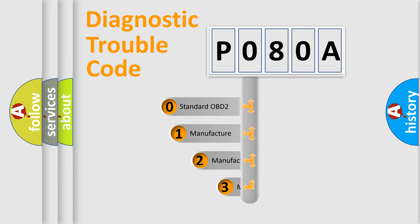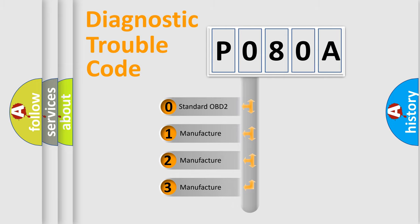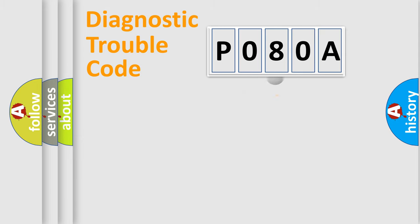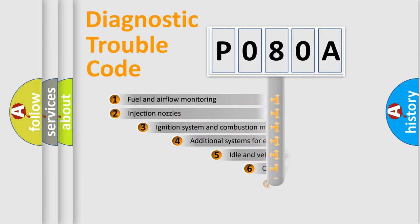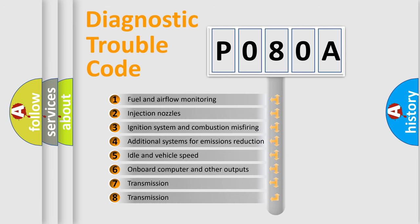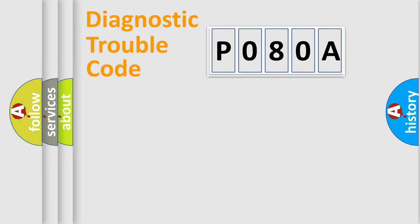If the second character is expressed as 0, it is a standardized error. In the case of numbers 1, 2, or 3, it is a manufacturer-specific error. The third character specifies a subset of errors. The distribution shown is valid only for the standardized DTC code.